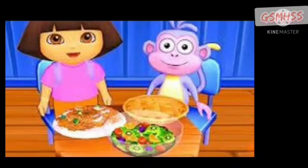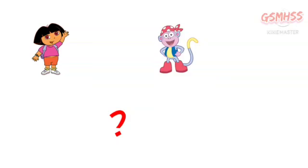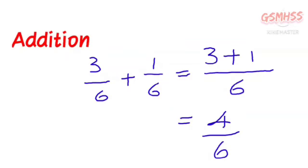Look at them. They are eating pizzas. Dora eats 3 of 6th pizza and Butchie eats 1 sixth of pizza. How much pizza did two of them eat in all? Here, we have to add both the fractions to get the answers.